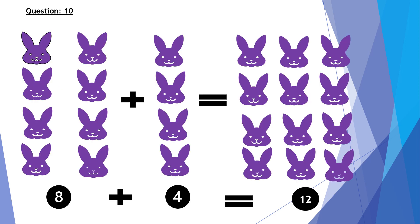Last question: eight rabbits plus four rabbits equals twelve rabbits. So in the number form, eight plus four equals twelve.